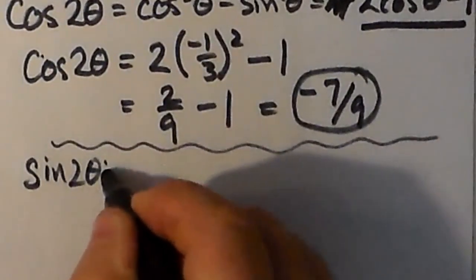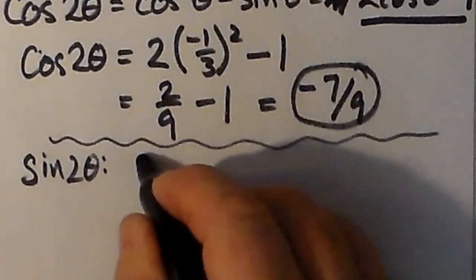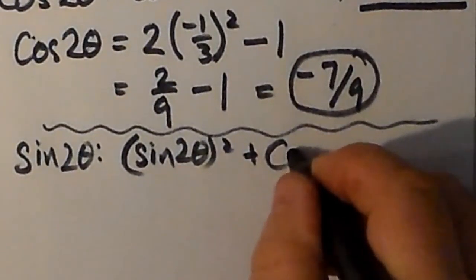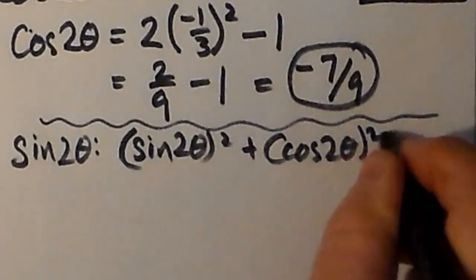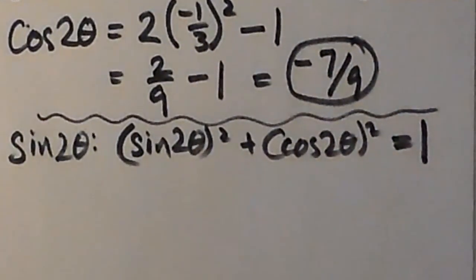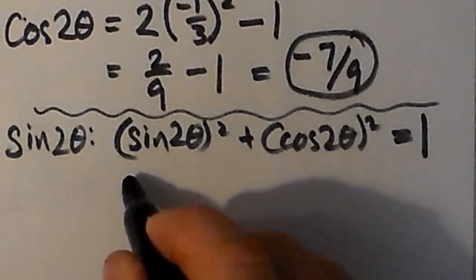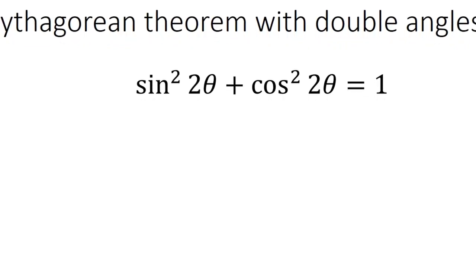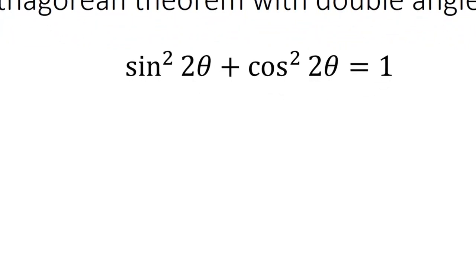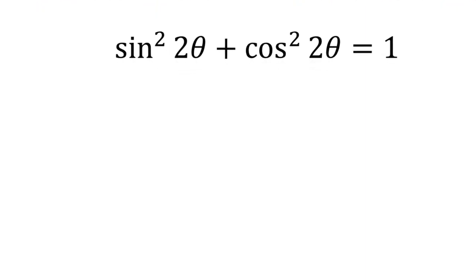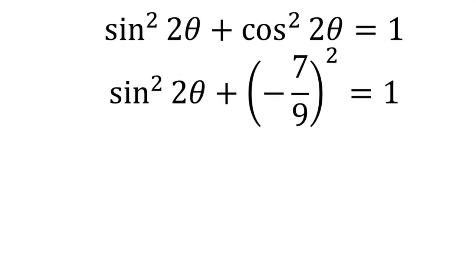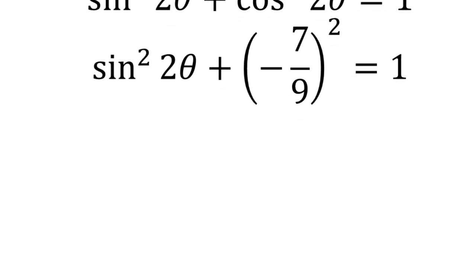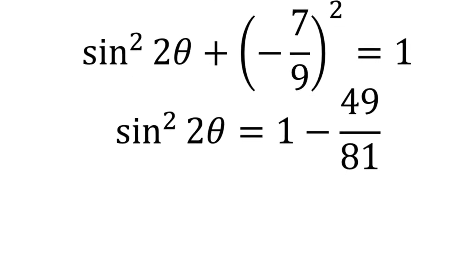For sin 2θ, we can actually apply the Pythagorean identity even though it's 2θ — it's a very valuable tool. Given that we already know cos 2θ, we can find sin 2θ on the cheap. The Pythagorean identity with double angles gives sin²2θ plus cos²2θ equals 1, and 2θ is nothing more than just another angle. We can replace cos 2θ with negative 7/9.